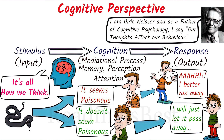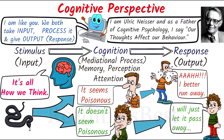Many psychologists who adhere to the cognitive perspective compare human thinking to the workings of a computer, which takes in information and transforms, stores, and retrieves it when needed. In their view, thinking is information processing, and that information is used in the future for deciding whether to repeat the behavior or not.